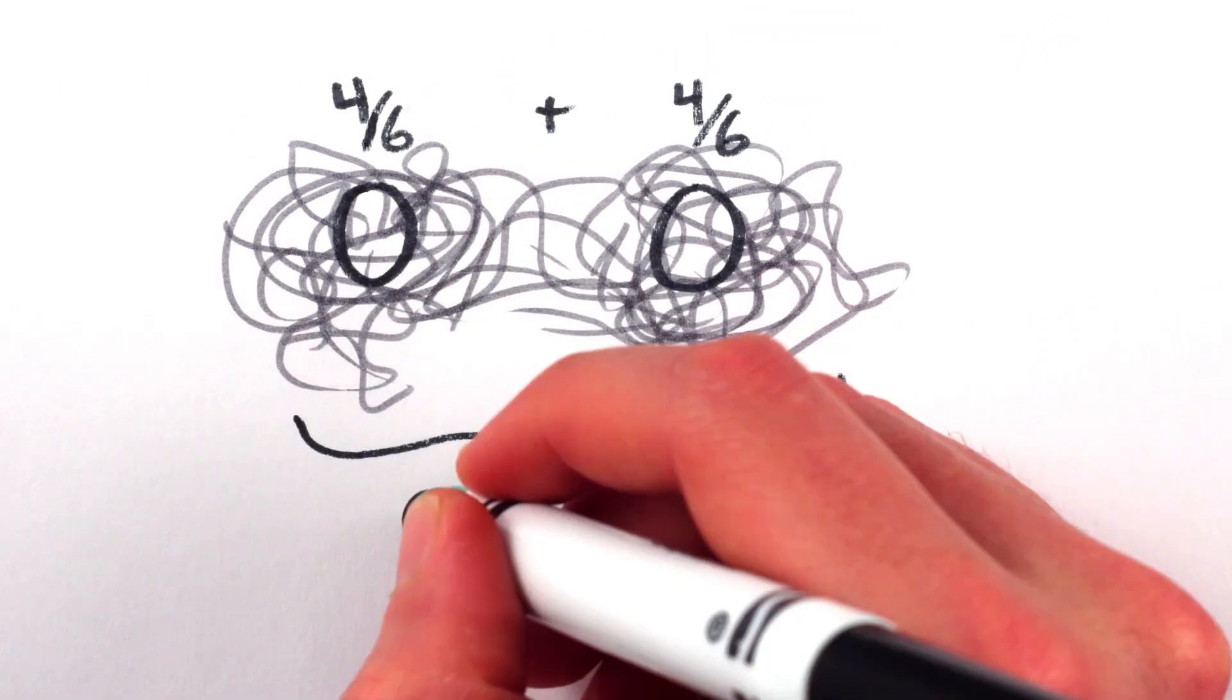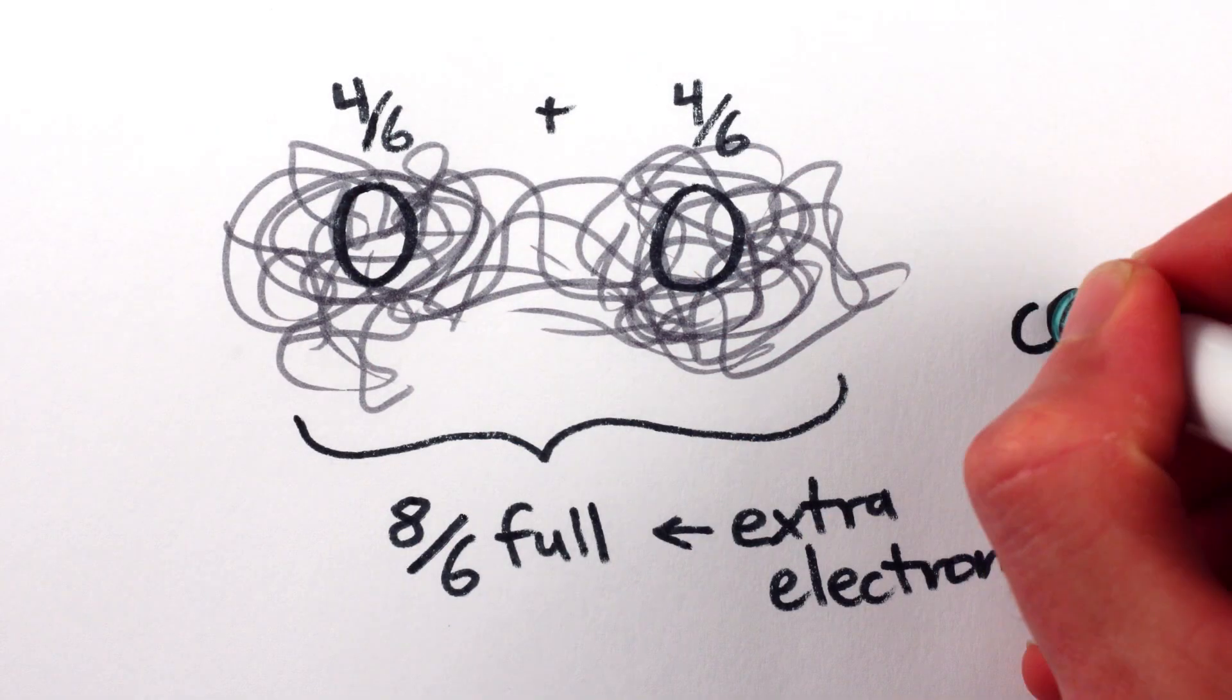On the other hand, molecular O2, as we've seen, still has unpaired electrons, and it's paramagnetic.